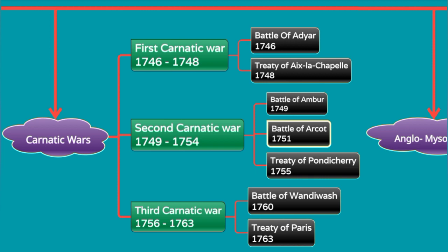The Second Carnatic War ran from 1749 to 1754. It featured the Battle of Ambur in 1749 and the Battle of Arcot in 1751. This war concluded with the Treaty of Pondicherry in 1755.